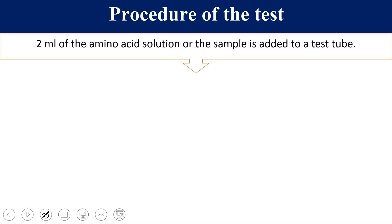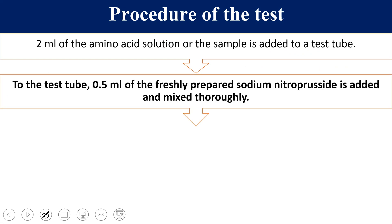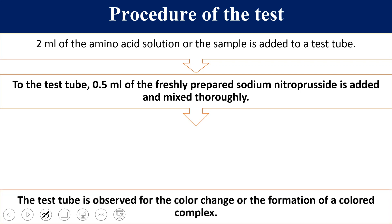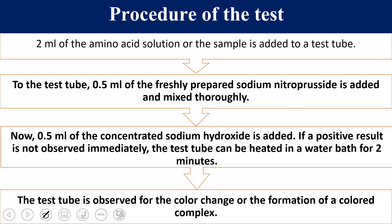For the procedure: first, take 2 ml of amino acid solution or the test solution you want to detect. Then add 0.5 ml of freshly prepared sodium nitroprusside and mix thoroughly. Then add 0.5 ml of concentrated sodium hydroxide or ammonium hydroxide. If a positive result is not observed immediately, heat the solution in a water bath for 2 minutes, then observe for color changes or color formation — any red or violet color.